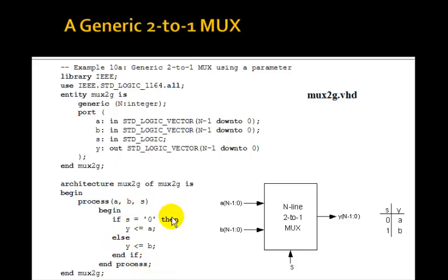Now notice that the architecture is exactly the same as we had for both the 2 to 1 mux and the quad 2 to 1 mux. That is process a, b, s. If s is equal to 0, then y gets a, else y is b. So this is a generic n line 2 to 1 mux, where if s is 0, all n of these a's become all of the n y's. And if s is 1, then all of the b's go to get connected to the output y.